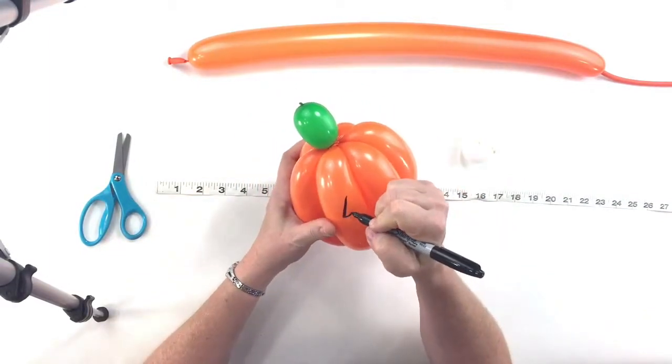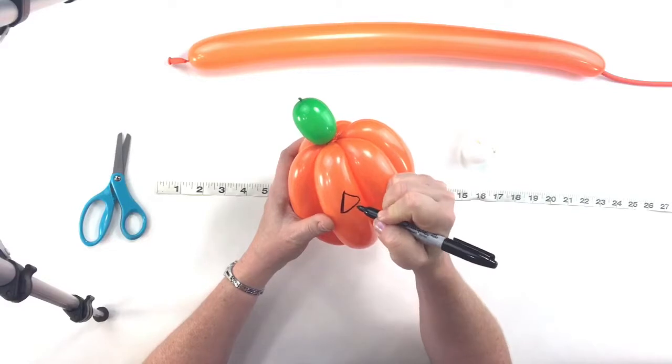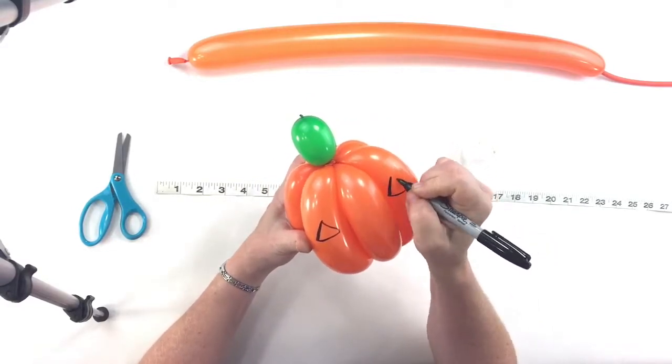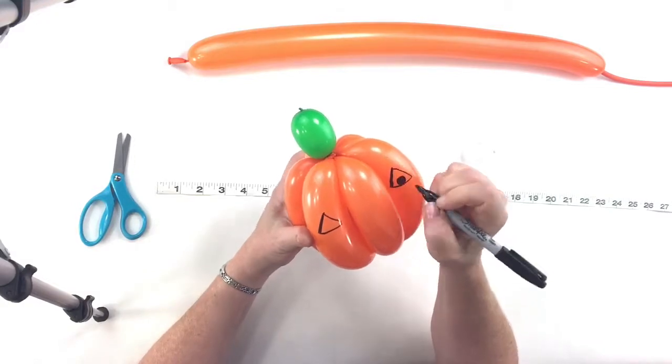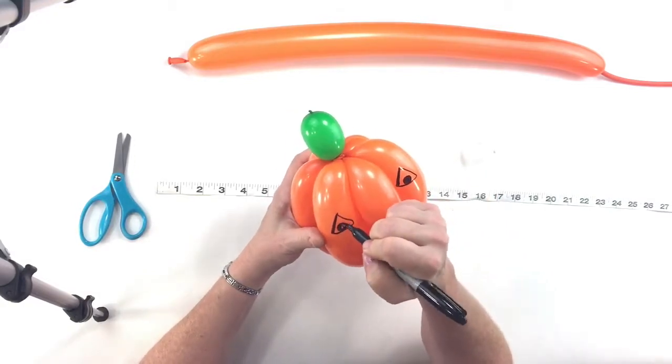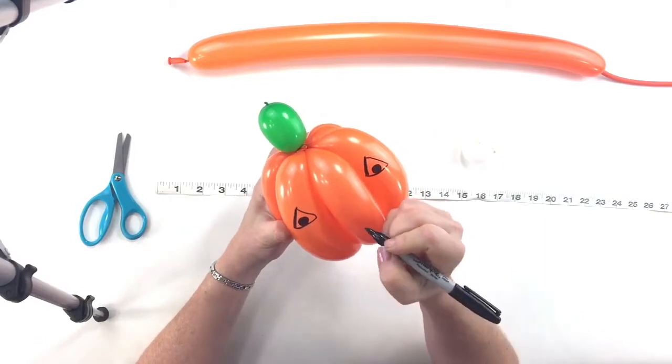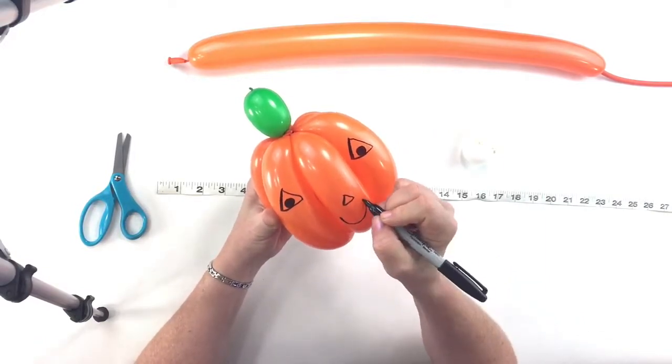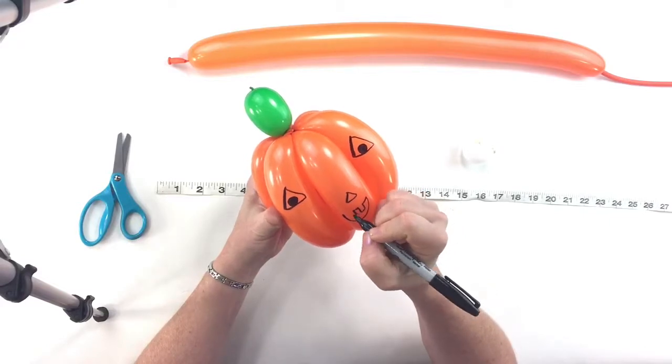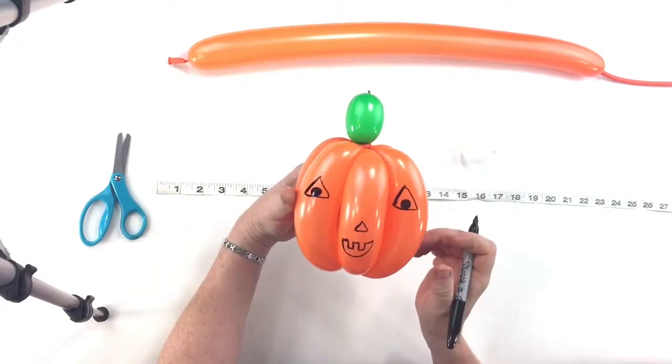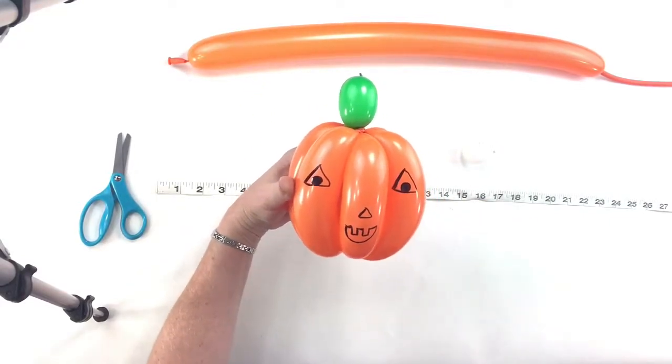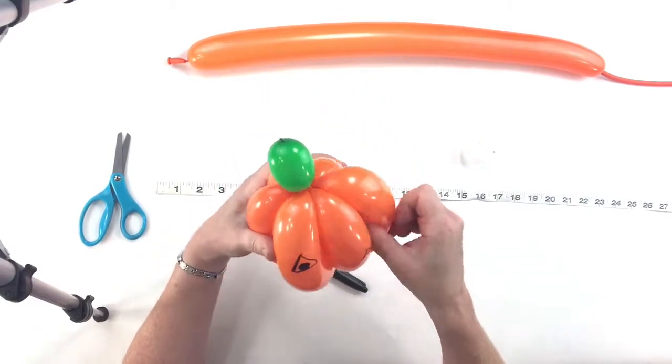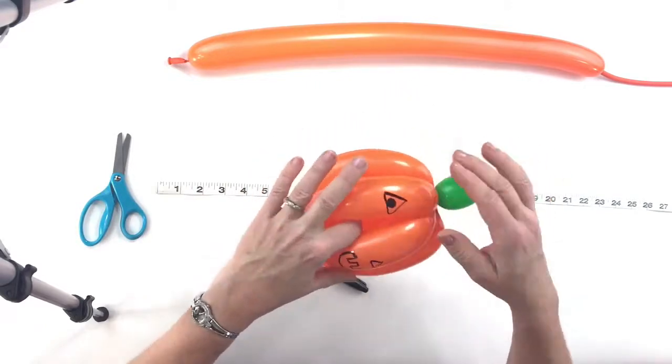So for this one that I just draw on, I'm going to make two triangles, one here and one over here. And draw little circles in them. And draw a little triangle here for the nose, and then little teeth like this. So I've done it that way. Let me show you another way I've done it.